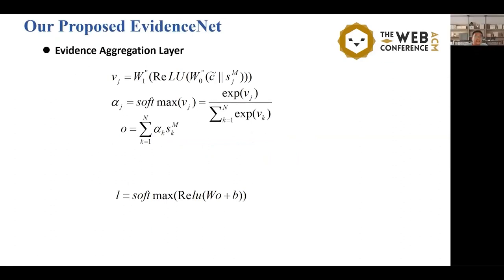In the aggregation layer, we use the aggregation operators to gather information from different evidence nodes and obtain the final graph node. Here, we use the representation of the claim to attend the graph of the evidence and obtain the final representation. After obtaining the final representation, we use one layer of MLP to get the final prediction.